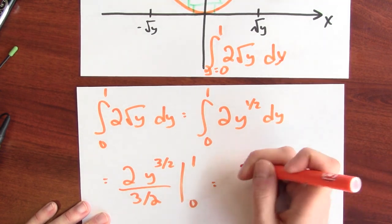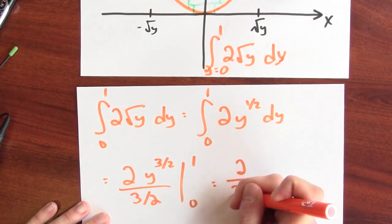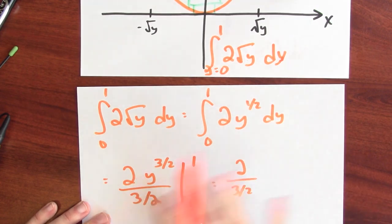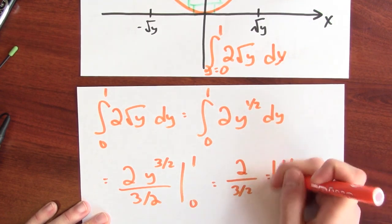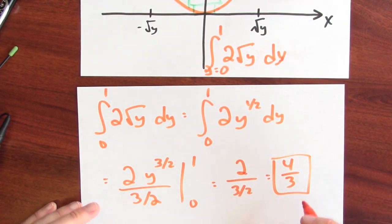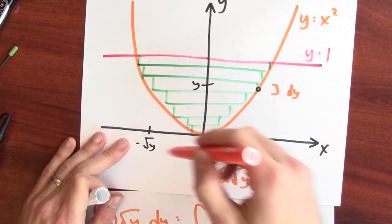Well, when I plug in 1, I get 2 over 3 over 2. When I plug in 0, I get 0. So the answer is 2 divided by 3 over 2, which I can rewrite as 4 thirds, which is the area of this region.